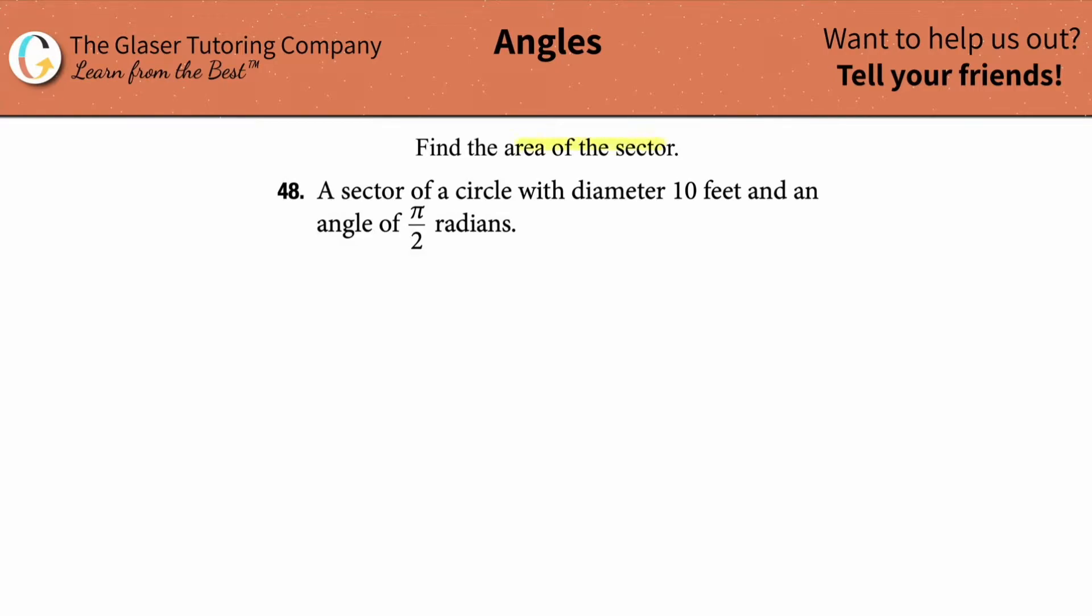In this problem we're going to find the area of a sector of a circle. We have a sector with diameter 10 feet and an angle of π/2 radians.